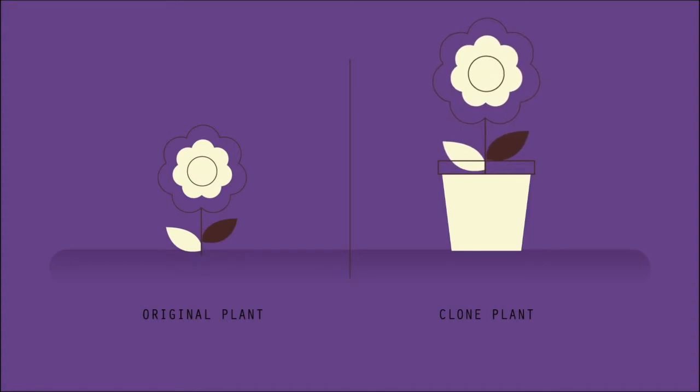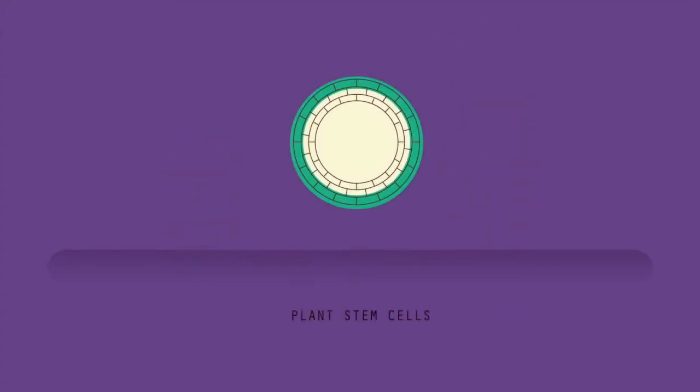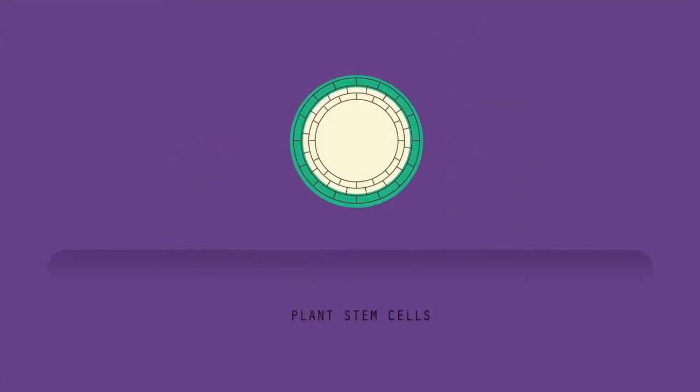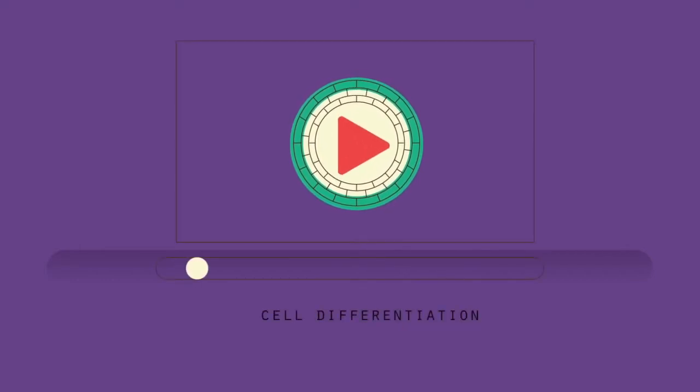The method works because the shoots of the plant contain stem cells, which are able to differentiate to form different cells and tissues. You can find out more about this process by watching this video.